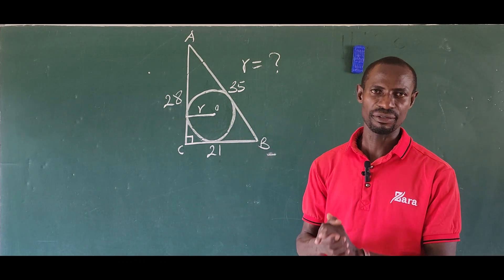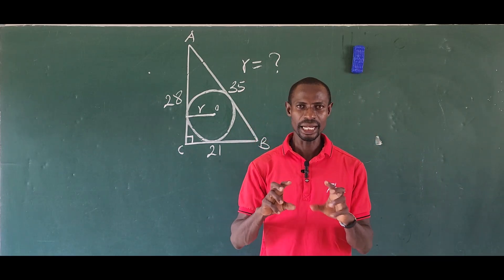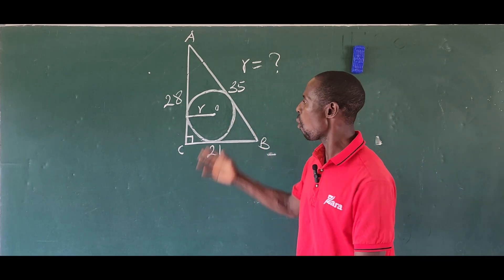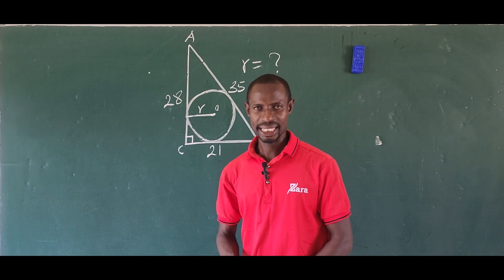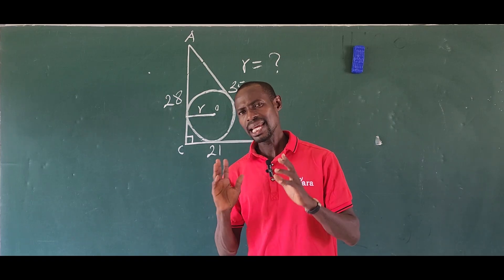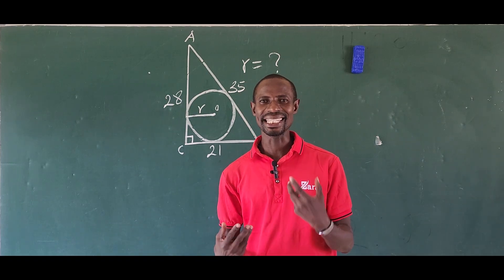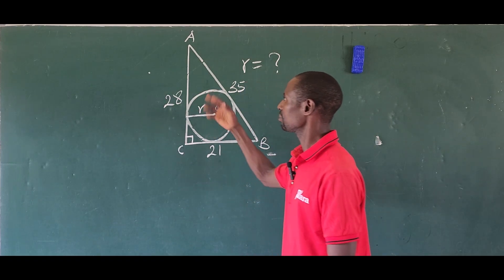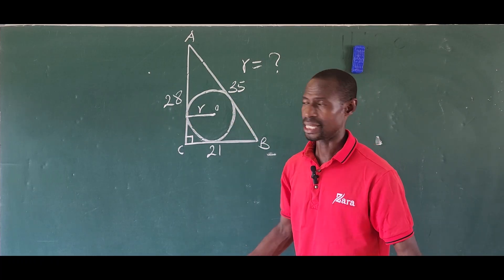If you look at this critically, O is the center of the circle. So is there any relationship between the inscribed circle and the triangle itself? Yes, there is a relationship.